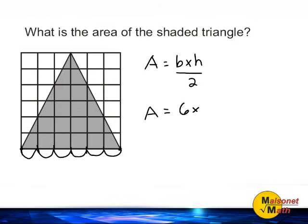Now we have to multiply that by the height of the triangle, which is from the top of our triangle straight down to the bottom. And we would say from here to here is one, two, three, four, five, and six. So the height of our triangle is also six units.